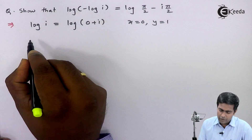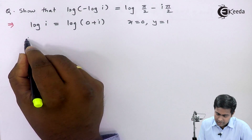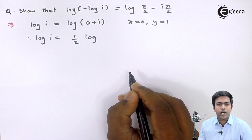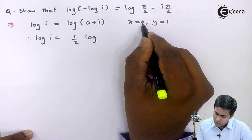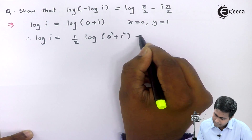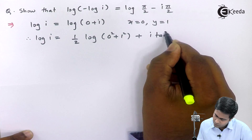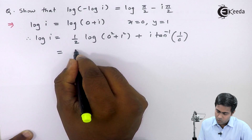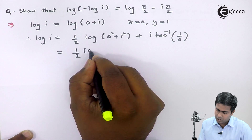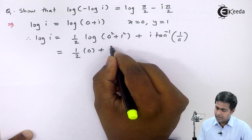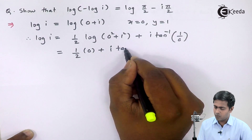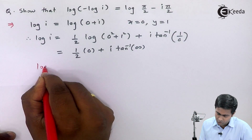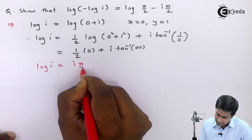Using the logarithm formula, log of i equals one half log of x squared plus y squared plus i tan inverse of y by x. Substituting x equals 0 and y equals 1: one half log of 0 squared plus 1 squared plus i tan inverse of 1 by 0. This gives one half times log of 1, which is 0, plus i tan inverse of infinity. Since tan inverse of infinity equals pi by 2, we get log of i equal to i pi by 2.